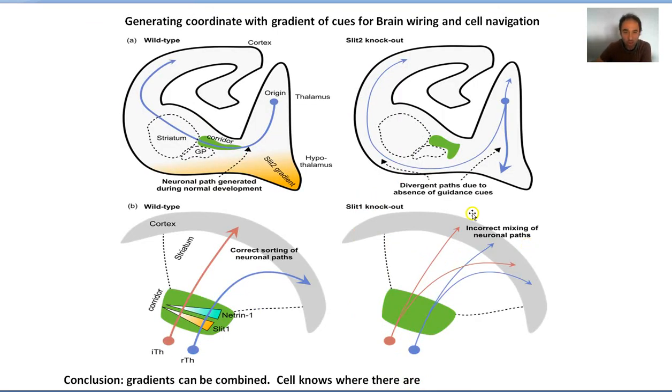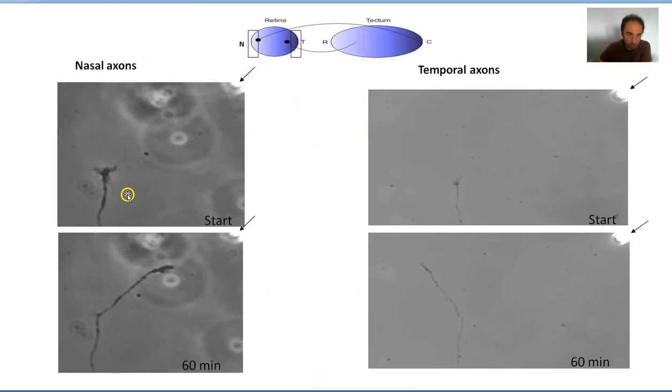This is more or less the same representation where I showed this graded expression. The conclusion is that gradients can be combined, and cells know where they are according to this gradient, so they can generate correct paths for the correct brain wiring. And again, this is an example of nasal axons. The arrow here indicates the location of the gradient, and you see the nasal axon turn in this direction, while the temporal axon goes in the opposite direction, confirming that a graded expression can guide neurons.